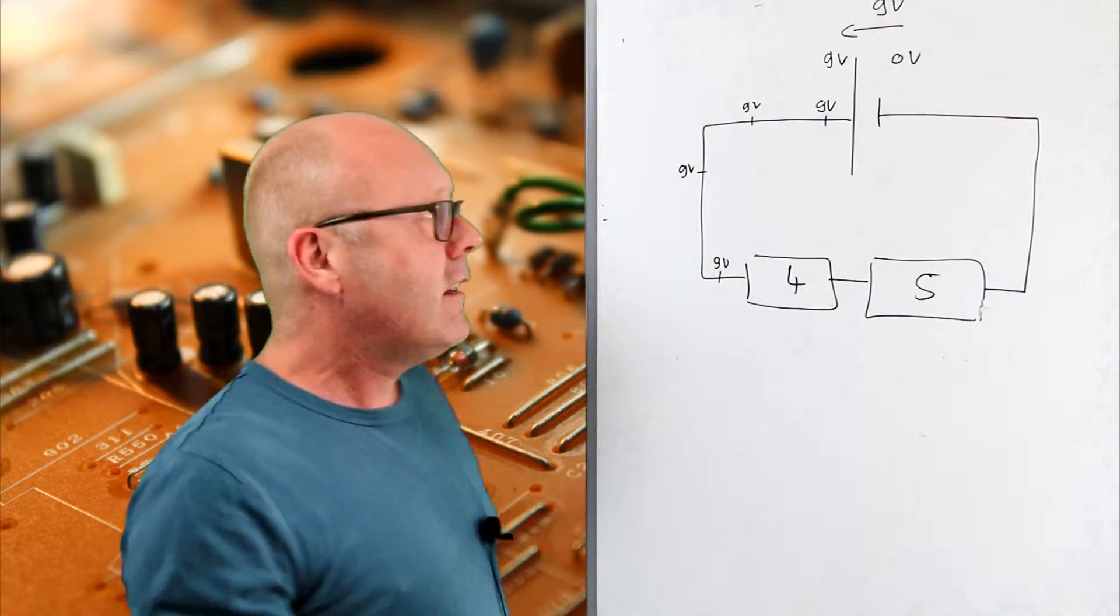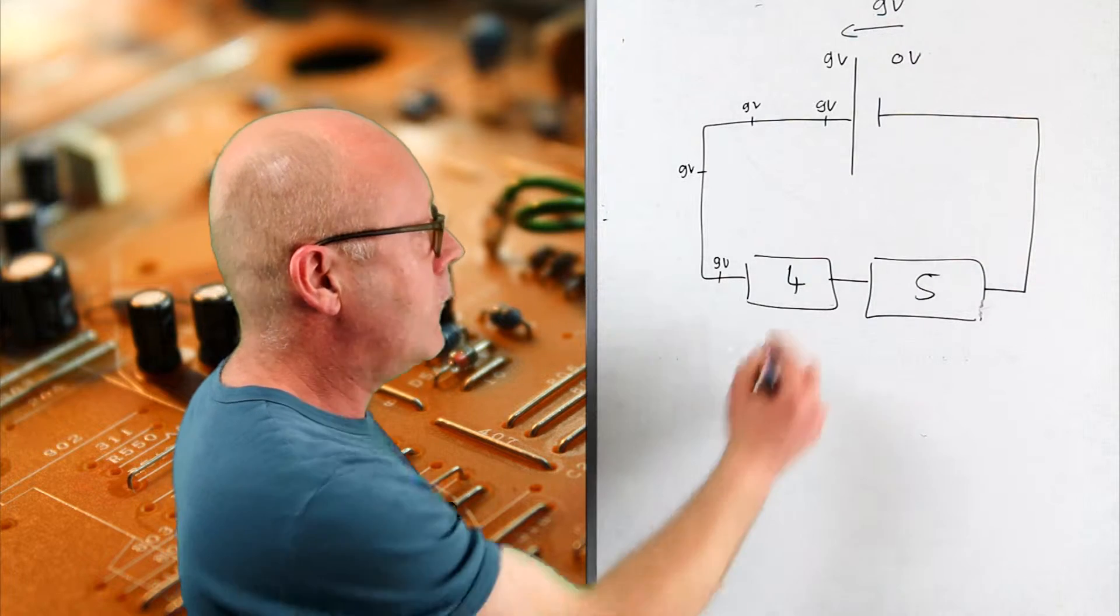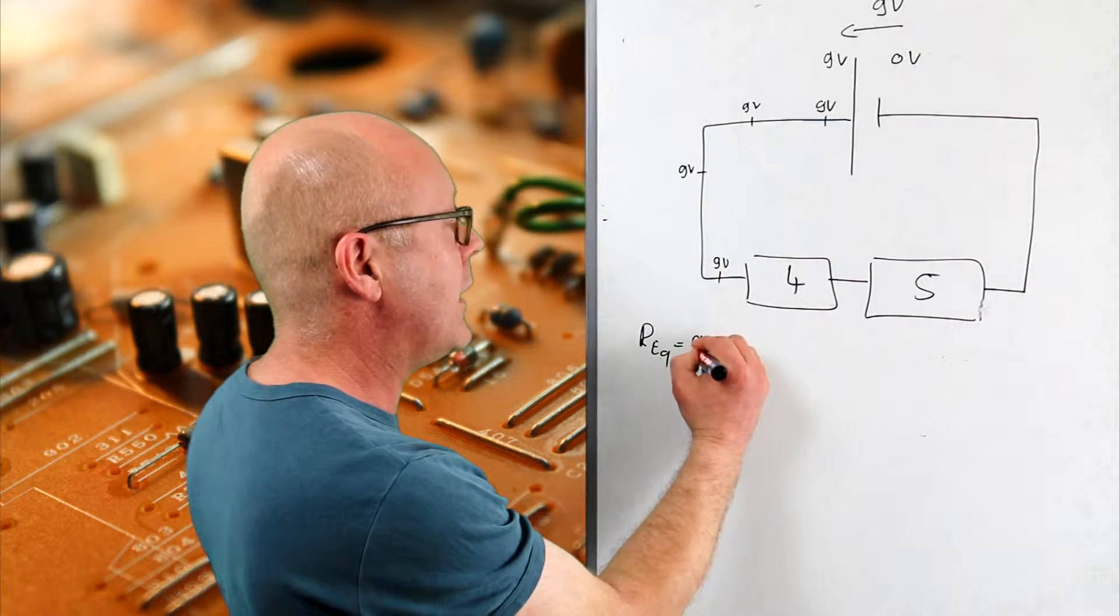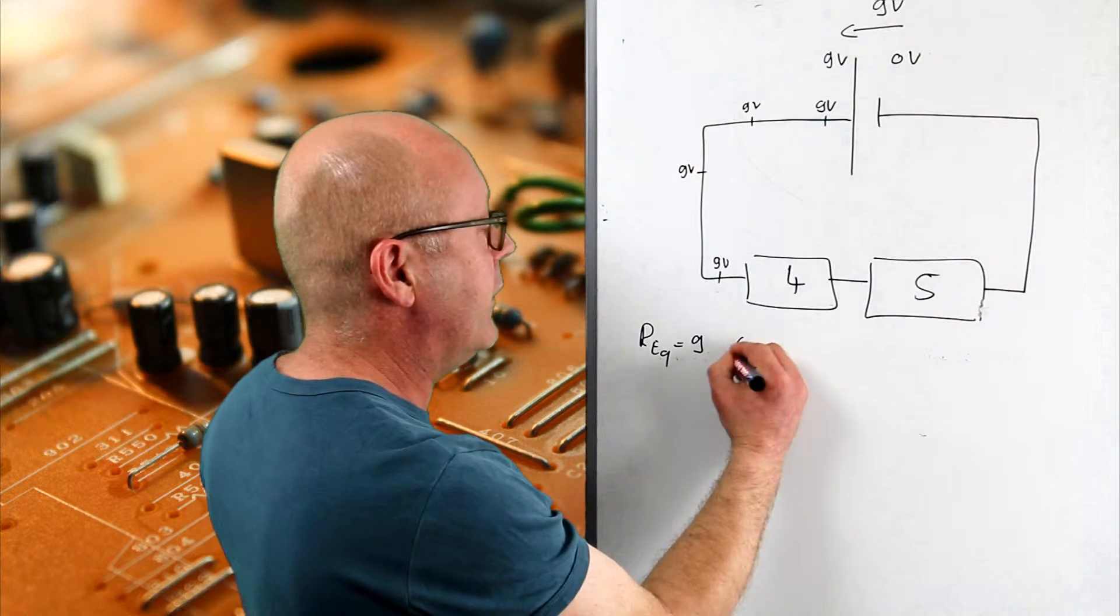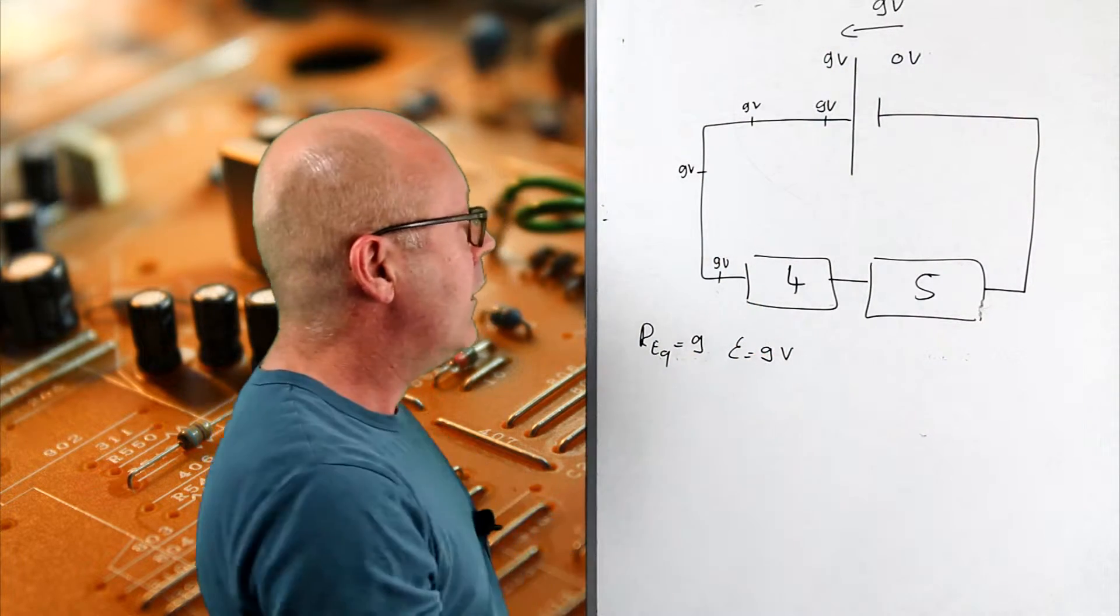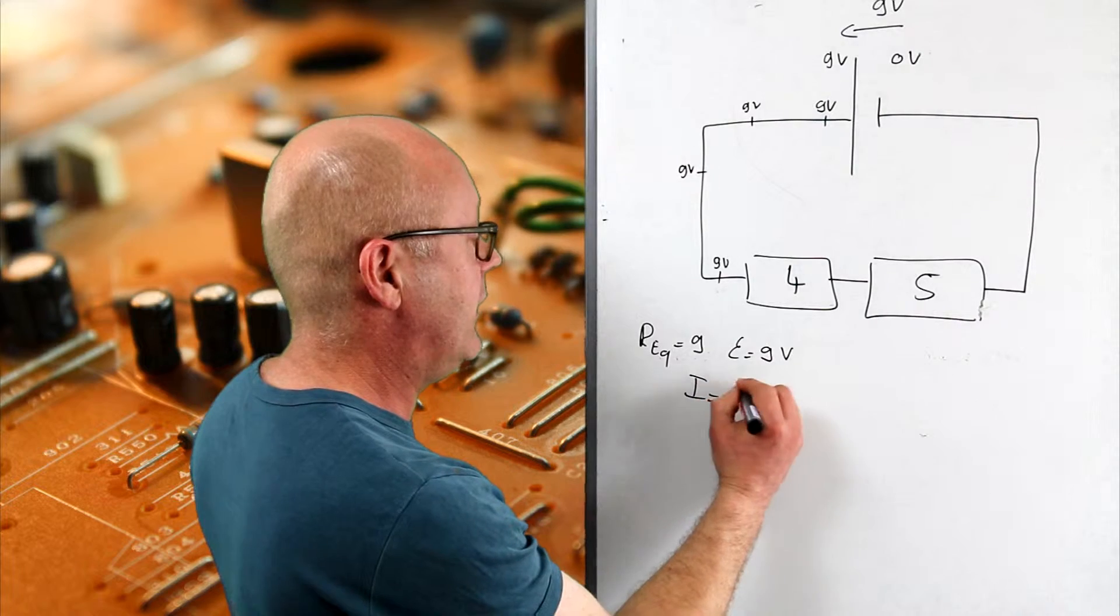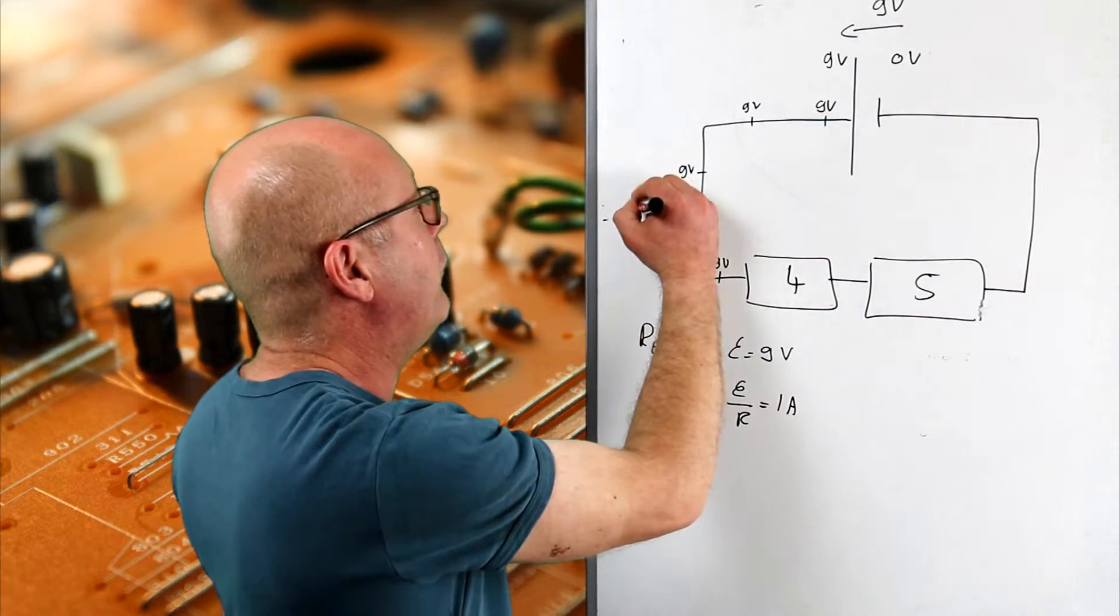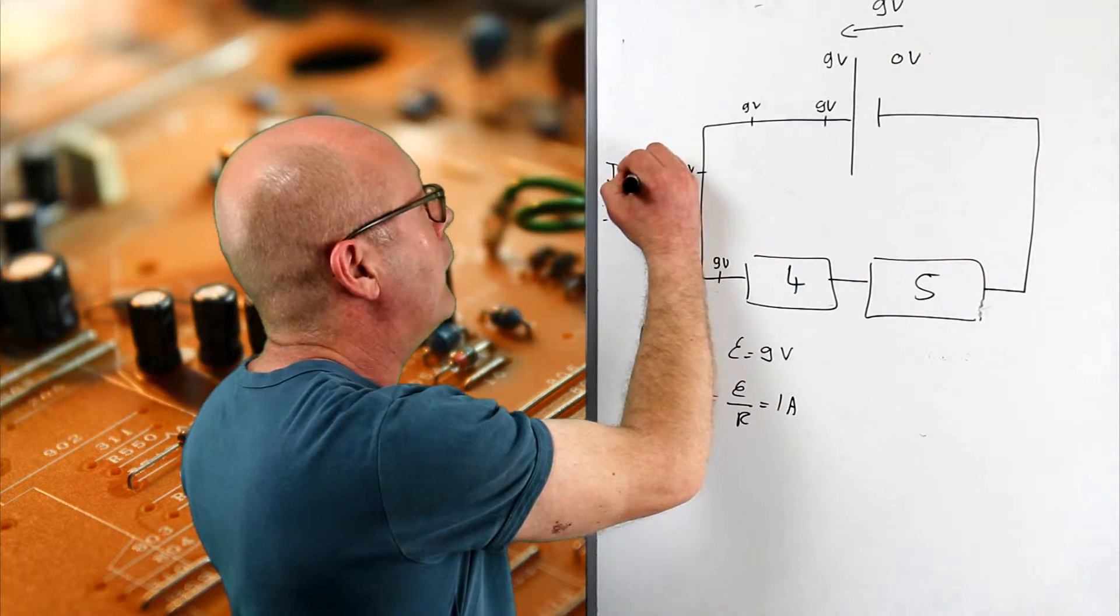Then it means a resistor. Let's calculate the current here. The equivalent resistance is four plus five, so nine. The emf is nine volts. So you can find the current, which is epsilon divided by r, giving you one amp.